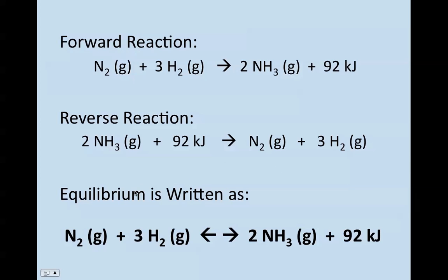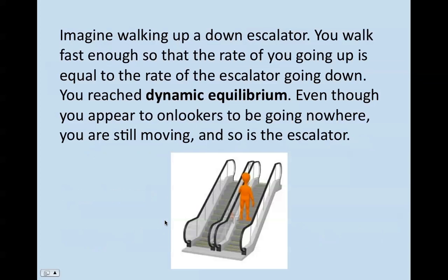So we can show our equilibrium and reversible reaction by using the double arrow, representing that not only does nitrogen and hydrogen produce ammonia, ammonia is going to be breaking down into nitrogen and hydrogen gas at the same time. So this idea of equilibrium...